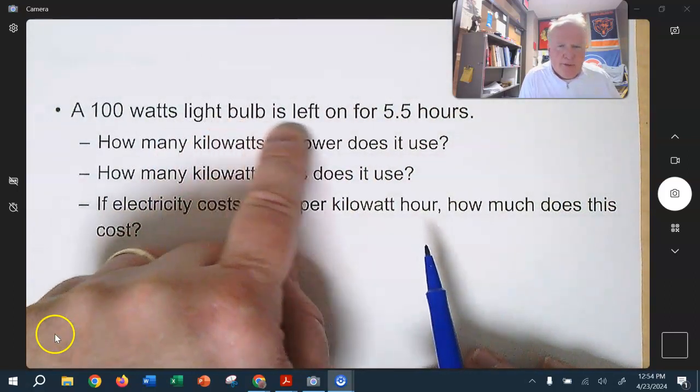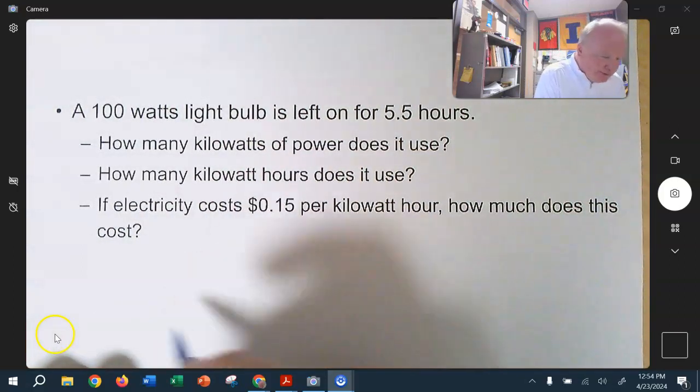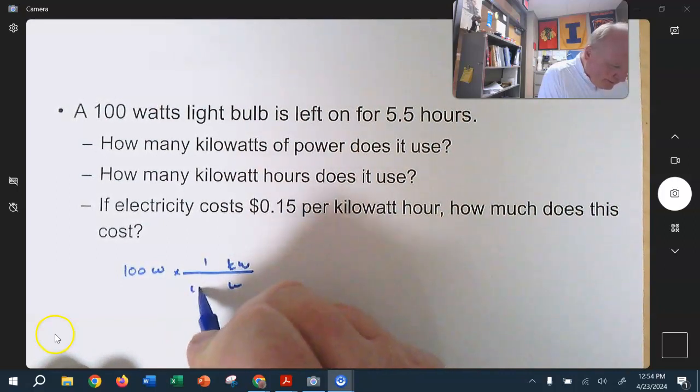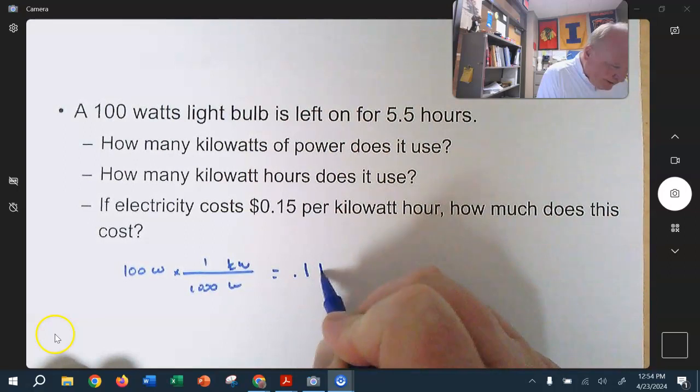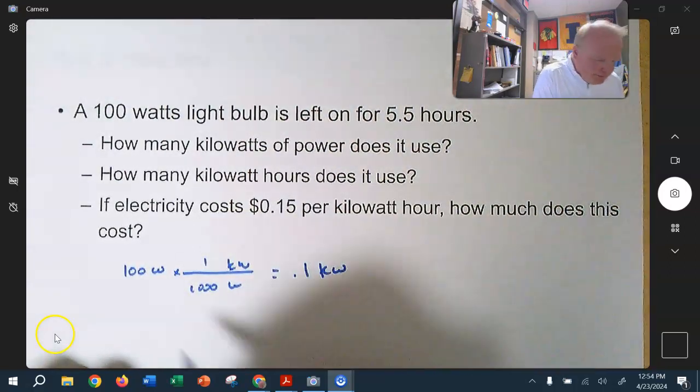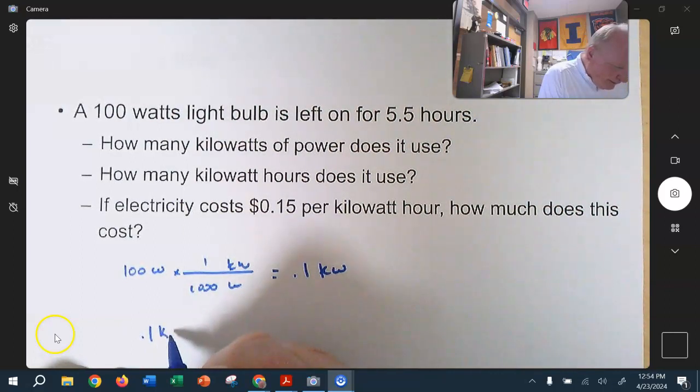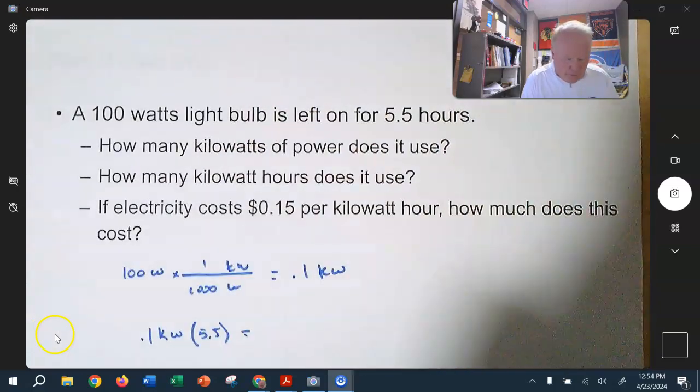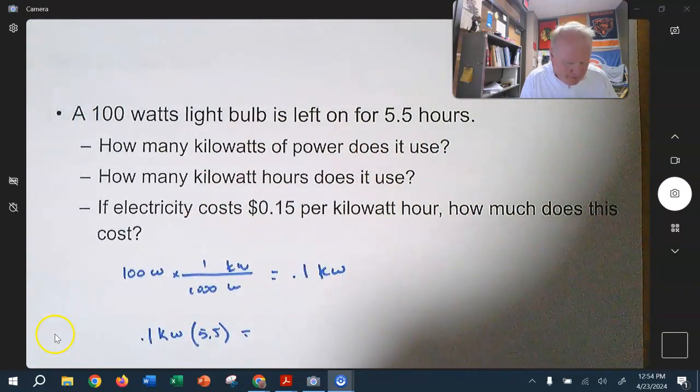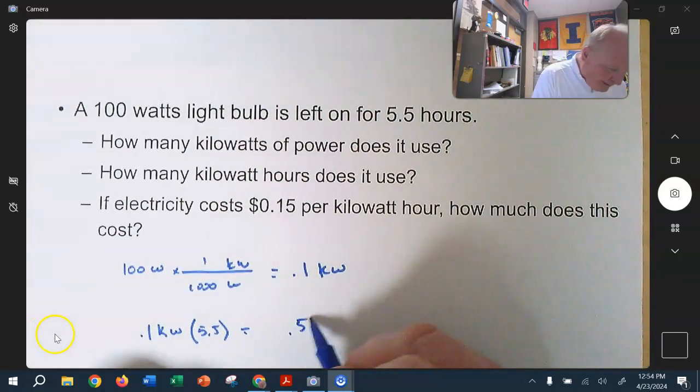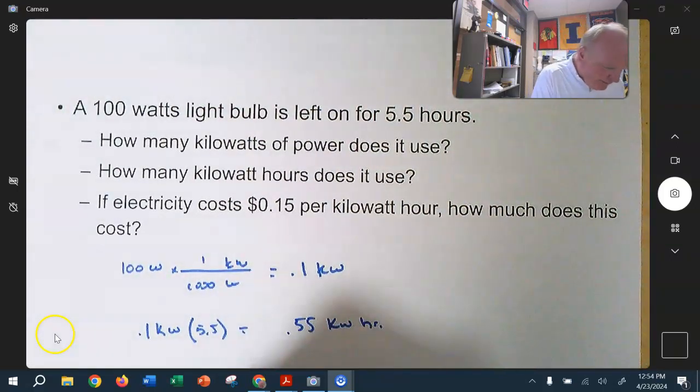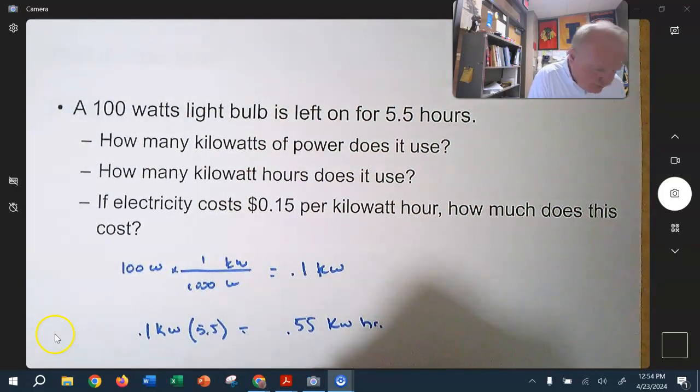Real quick, I'm going to be real fast here. So this is a 100 watt light bulb is left on for 5.5 hours. First question. How many kilowatts is that? 100 watts. Watts to kilowatts is just like this. And so we get 0.1 kilowatts. How many kilowatt hours does it use? Well, if we have 0.1 kilowatts and we're going to use it for 5.5 hours, we're going to get 0.1 times 5.5 and we get 0.55 kilowatt hours. And last thing, we just take that 0.55 kilowatt hours and multiply it by 0.1.